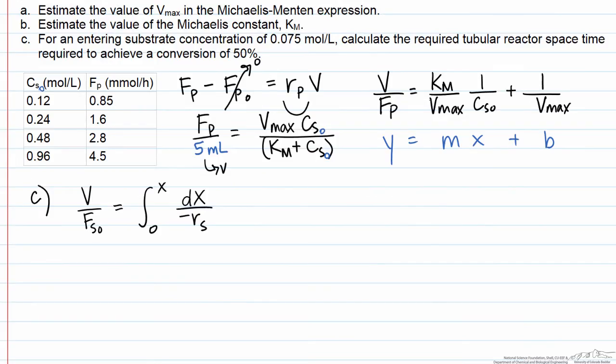One of our design equations for a tubular reactor is that the reactor volume divided by the inlet flow rate of the reactant is equal to the integral of dx over the negative reaction rate, integrated from 0 to x. Because this problem asks about the space time that's required, we'll do a change of variables here, and this volume over molar flow rate is equal to the space time over concentration. Here, we used the fact that the molar flow rate of S entering the reactor is equal to the total volumetric flow rate times the concentration of S, and the volume over the total volumetric flow rate is equal to the space time.